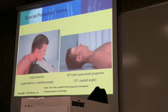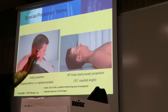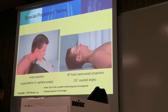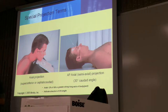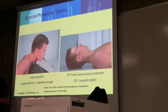The long axis of the body part is an axial projection. So when we're looking at the skull, the length of the skull — we're talking about the long axis — so the long axis will be from here to here, not this way. So an axial projection is where it matches the length of the long axis of the body part.